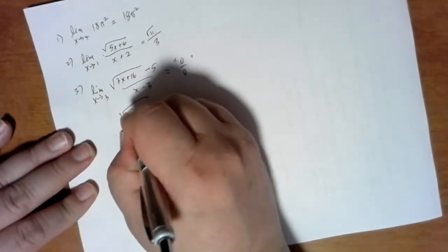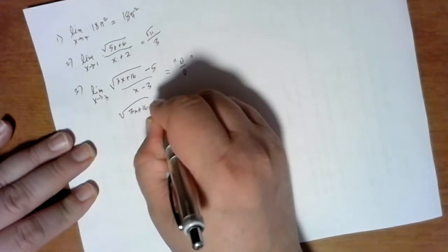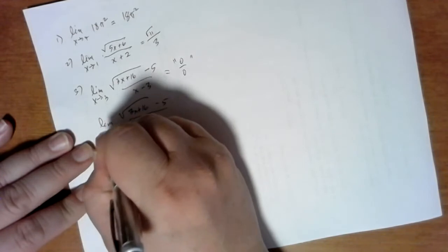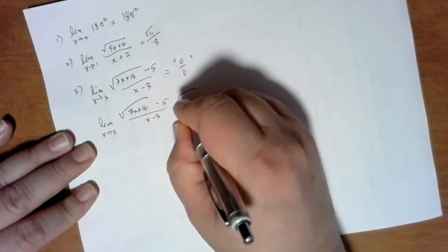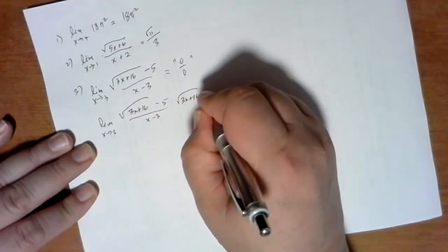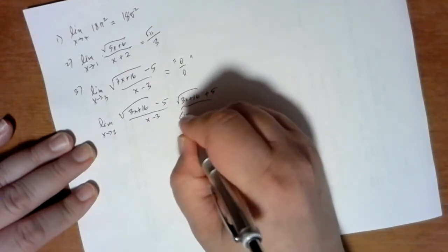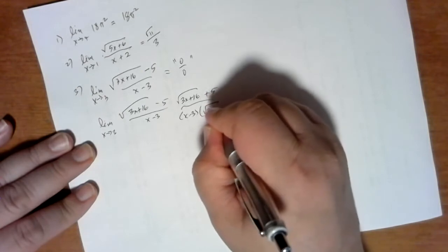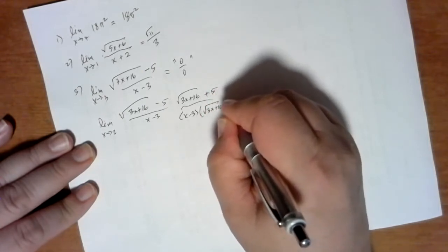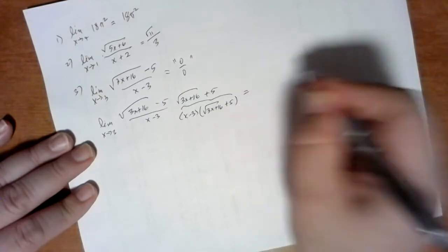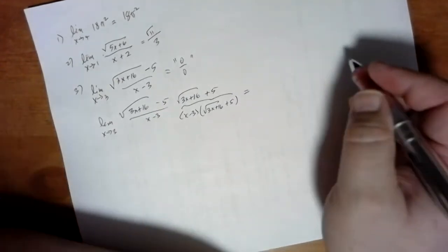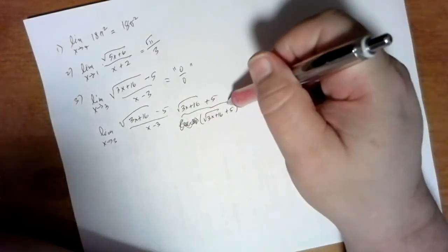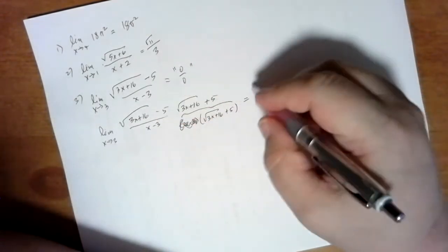I'm going to multiply by the conjugate and see what happens. Sometimes you've got to try things out just to see if it'll work. And with any luck, it won't take you too long to figure out what's going on. Okay, so now I'm ready.